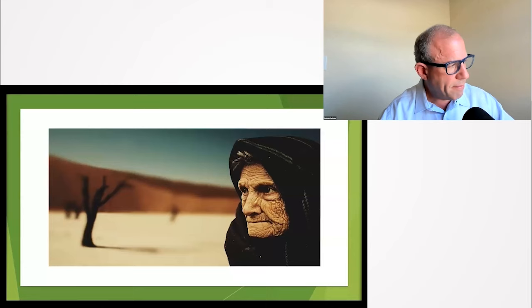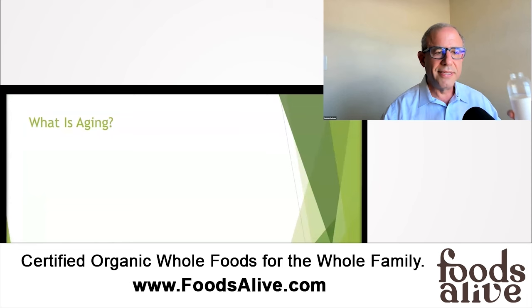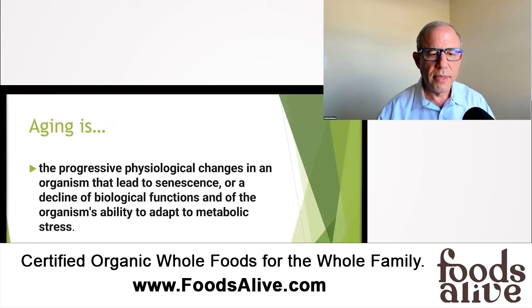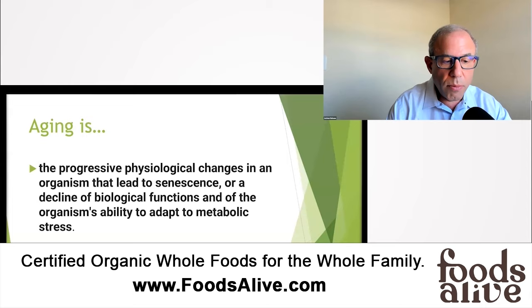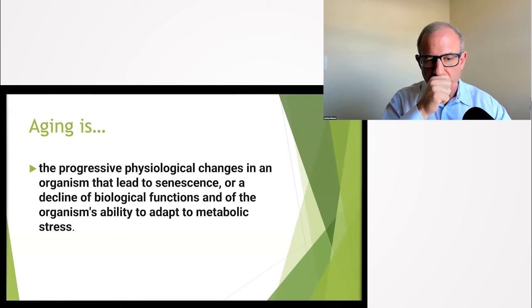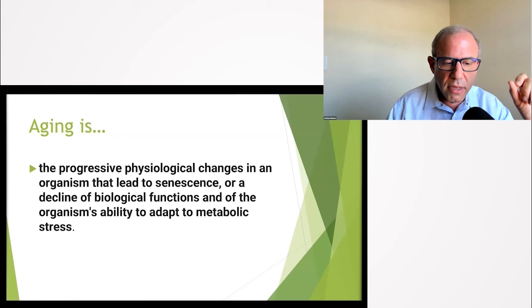That's not Queen Elizabeth, but it is an example that sometimes you can tell age just by looking at someone's face. So what is aging? Aging is a progressive physiologic change in a person or organism that leads to senescence. Well, what is senescence? Senescence is a decline of biological functions and of an organism's ability to adapt to metabolic stress.